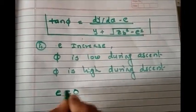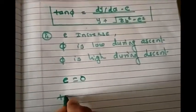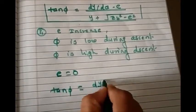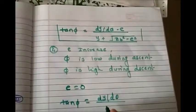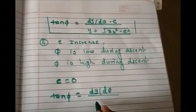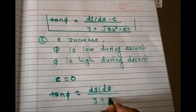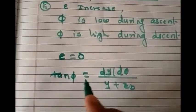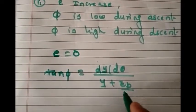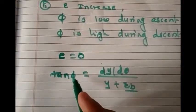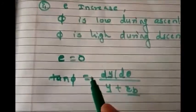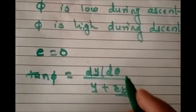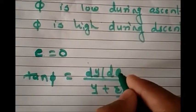When eccentricity e equals zero, the equation becomes tan(φ) = (dy/dθ) / (y + r_b). This indicates that increasing the value of r_b — the base circle radius of the cam — will decrease the pressure angle. So when we increase the base circle radius of the cam, the pressure angle is reduced.